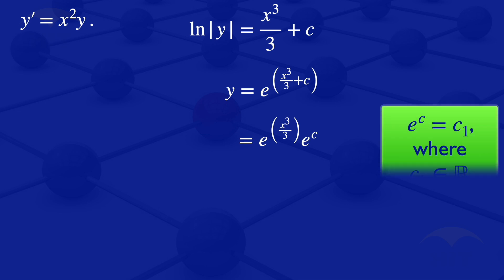So we can call that constant C1, where C1 is a real number. Because we are saying the exponent of a constant is a constant and we are calling that constant C1. Our equation will therefore become C1 multiplied by exponent of X cubed divided by 3.